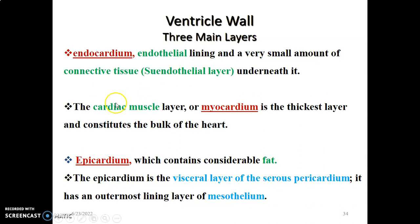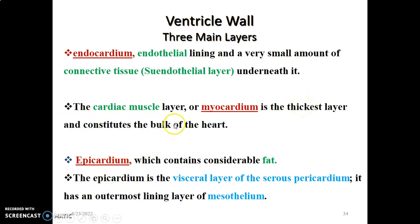The endocardium has a simple squamous endothelial lining. After the endothelial lining, there is a subendothelial layer made up of connective tissue, collagen, elastic fibers, and fibroblasts. The myocardium is mainly composed of cardiac muscle. Cardiac muscle cells are branching, with a single nucleus centrally located, and show striations and intercalated discs. The myocardium is the thickest layer, constituting the bulk of the heart to enable pumping.